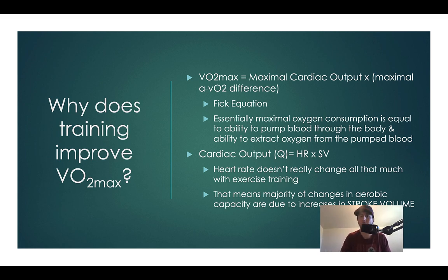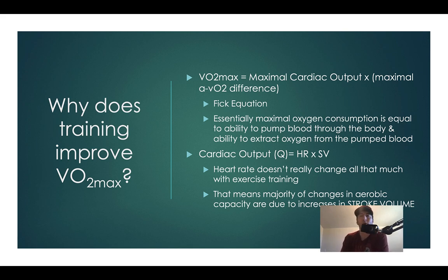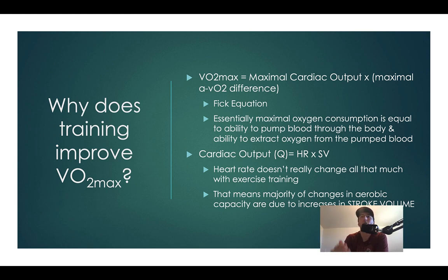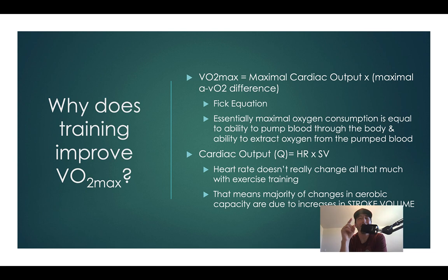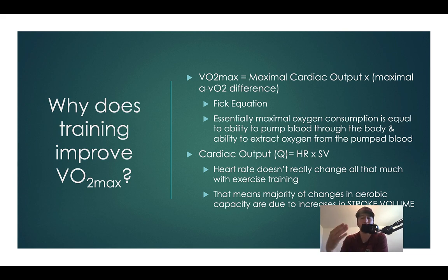The a-vO2 difference signifies our O2 extraction or O2 utilization, and cardiac output tests our pulmonary system — how much blood we can push out, fill with oxygen, and get through the body. This is known as the Fick equation. Heart rate isn't going to change much because we only have a certain threshold — our heart can only pump so fast. If anything, as we get fitter, our heart rate gets slower because it becomes stronger and doesn't have to pump as fast. So the major driver of changes here is going to be stroke volume.